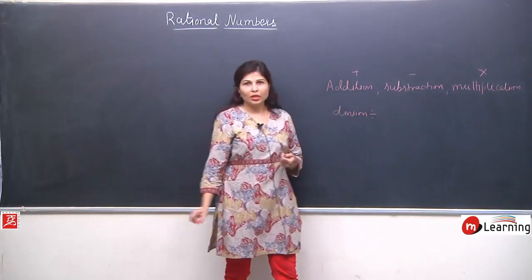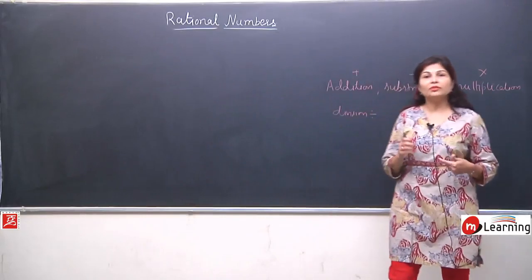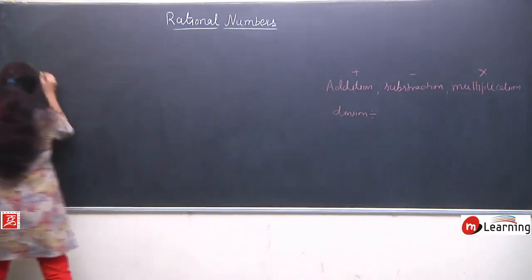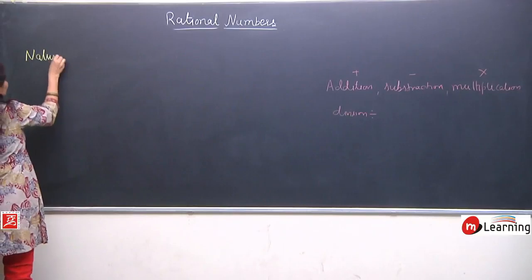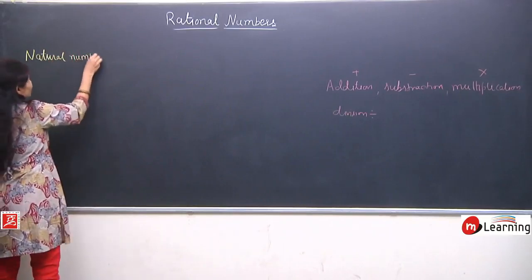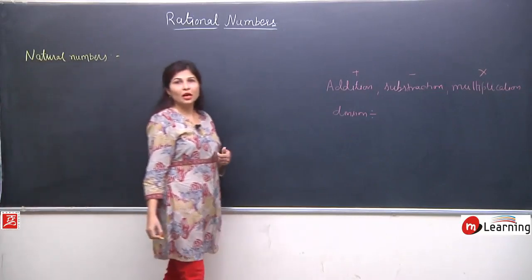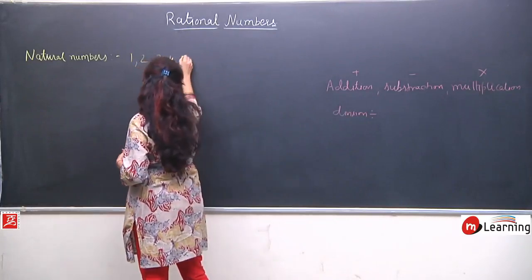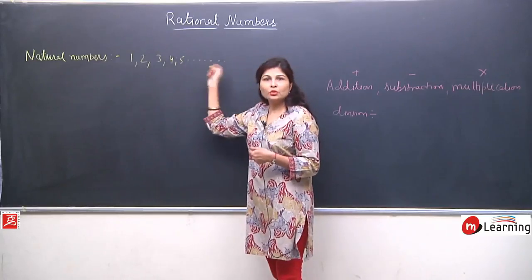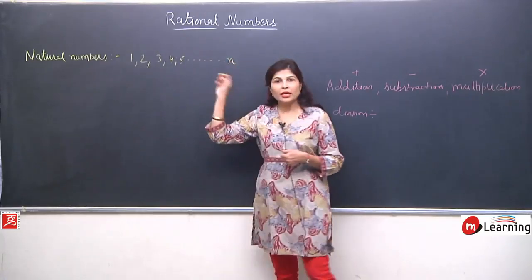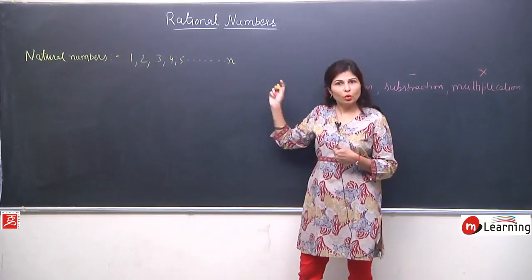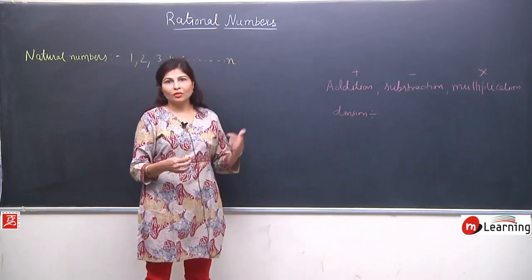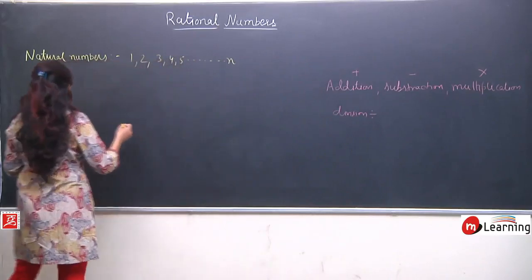When we became comfortable, we started learning different types of numbers, and the first type was natural numbers. Natural numbers are those numbers which start from 1 — like 1, 2, 3, 4, 5 and so on. There is no end limit; they are uncountable. So we can use the variable n for natural numbers.